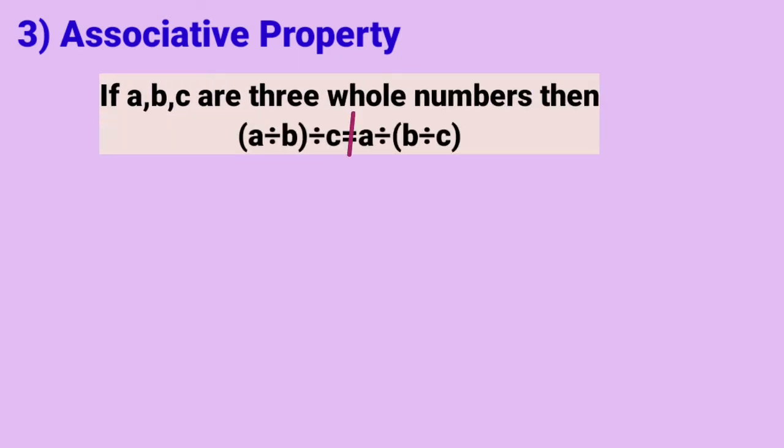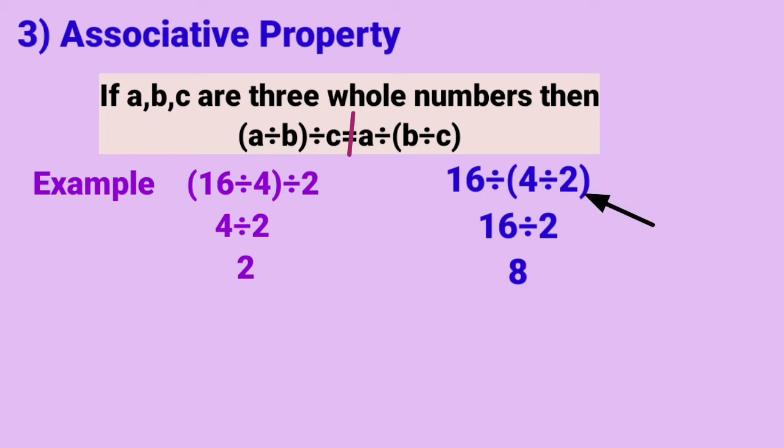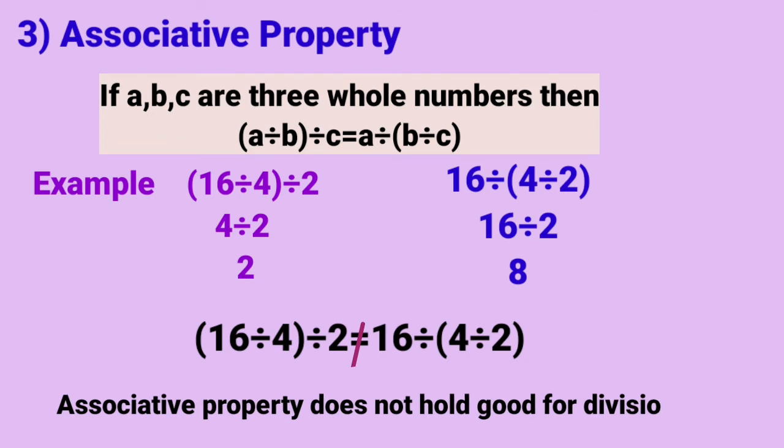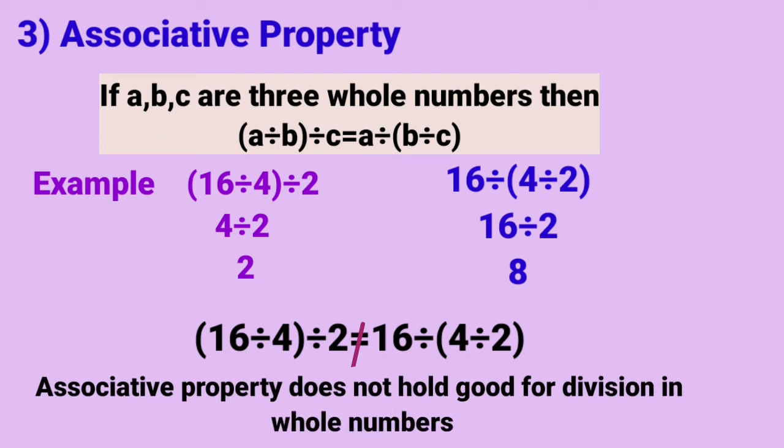Number 3: It is associative property. If A, B and C are three whole numbers, then A divided by B in bracket divided by C is not equal to A divided by in bracket B divided by C. Let's see this example here. 16 divided by 4 in bracket divided by 2. On solving this bracket it is 4, so 4 divided by 2 result is 2. And here if I solve 16 divided by 2, both sides answers are different. That means associative property also does not hold good for division in whole numbers.